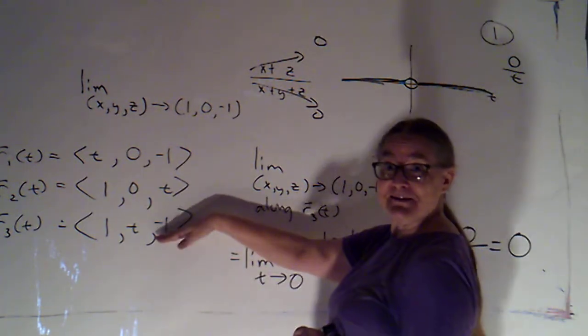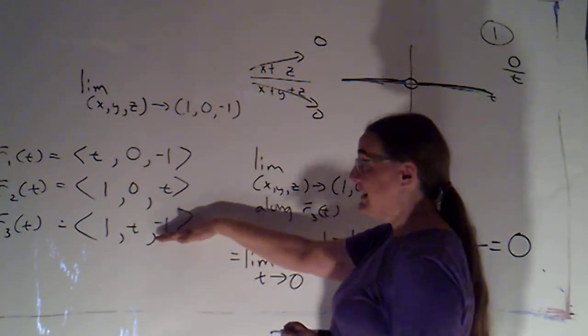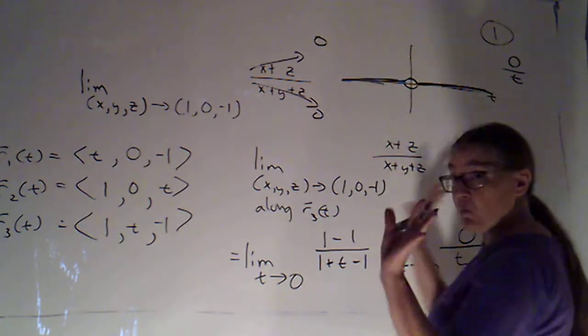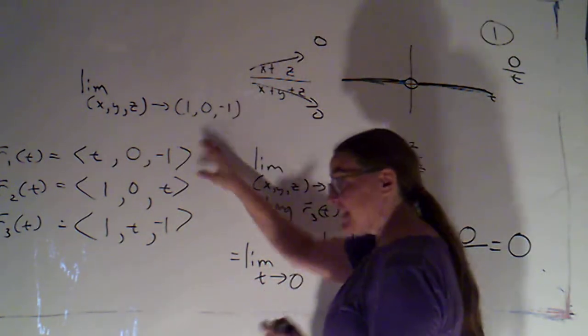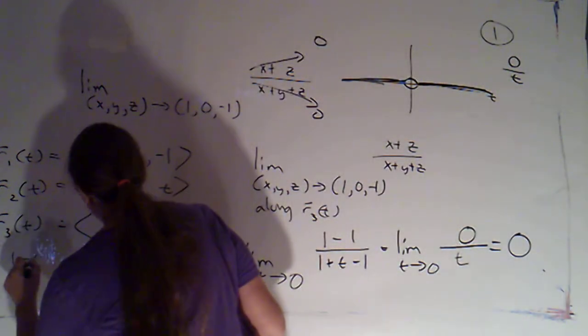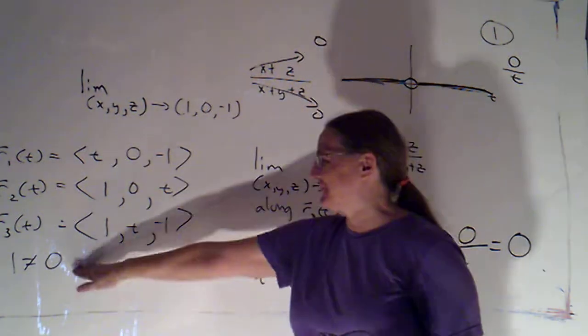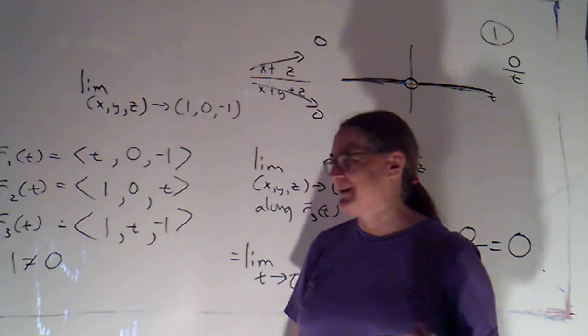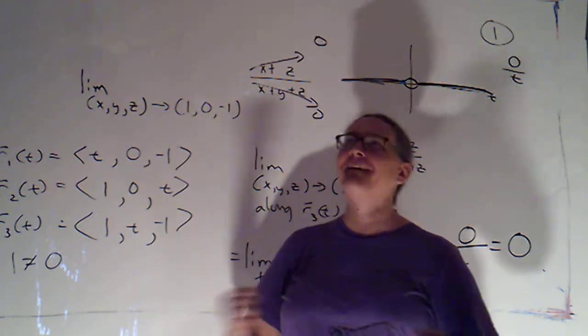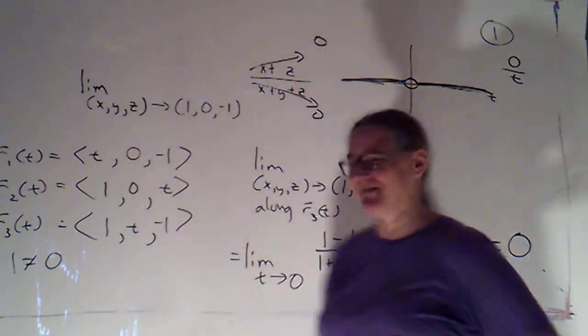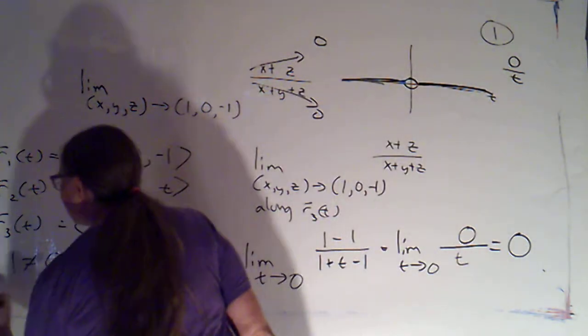So we do get a different limit along path 3. So now the first limit we got was 1. We got that on both 1 and 2. But I'm going to make the brilliant observation. I really enjoy this part because I get to feel smart for pointing out something so basic. 1 and 0 are different numbers.